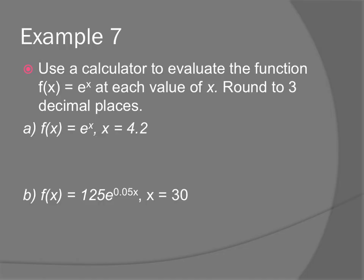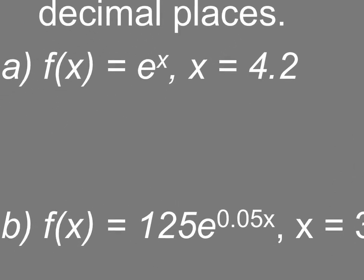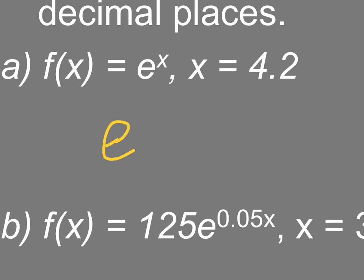So example seven says, use the calculator to evaluate the function f(x) equals e to the x at each value of x and then round to three decimal places. So for f(x) equals e to the x where x is 4.2, I literally in my calculator hit the E and the exponent will pop up. I type in the 4.2 and I get 66.6863, so I'm going to round that to 66.686, three decimal places.